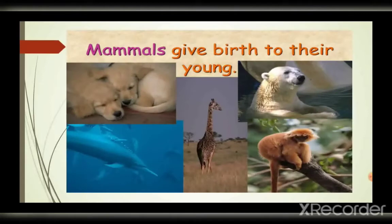Animals that give birth to young ones — what are those animals called? They are called mammals. The animals that give birth to young ones are called mammals. These include cat, dog, camel, horse, elephant, lion, tiger, and even human beings. Human beings are also mammals because they give birth to young ones. Whales, dolphins, and bats also give birth to young ones.